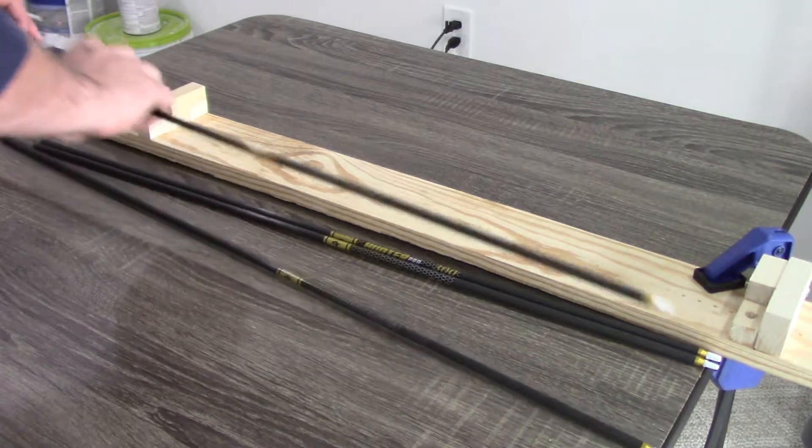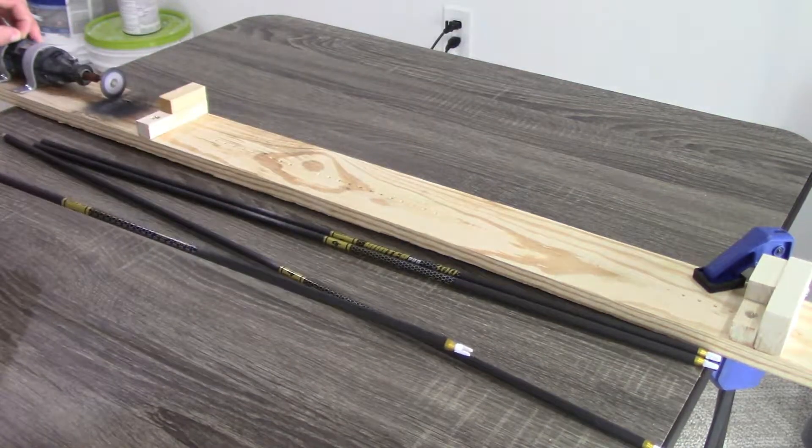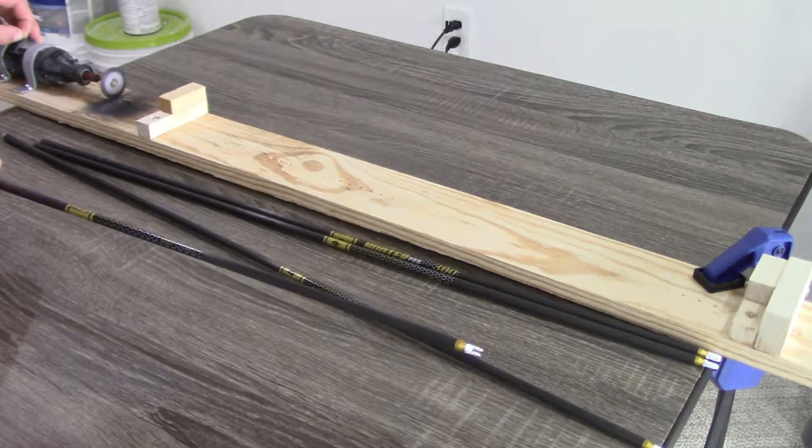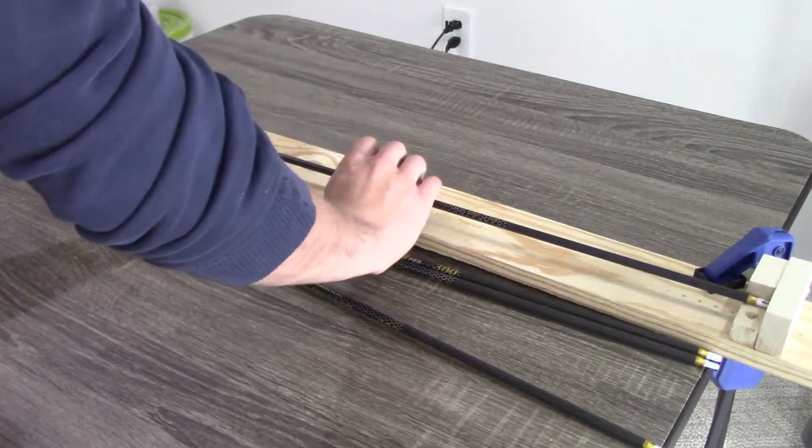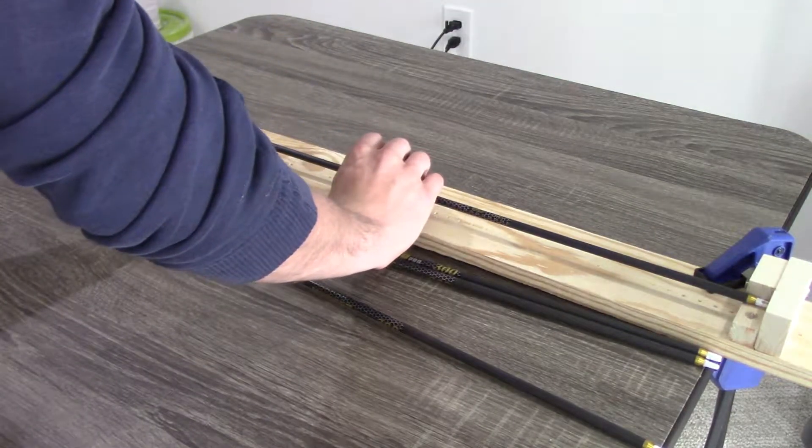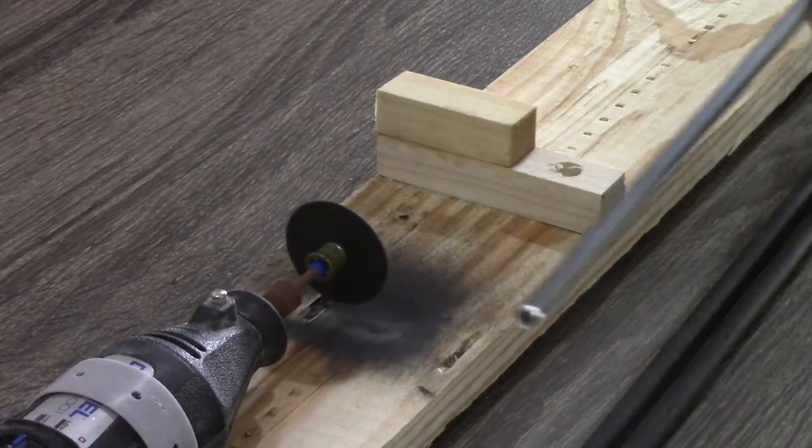The shaft I'm going to be starting with is a Gold Tip Pro Hunter 300 spine, 9.3 grains per inch. I'm going to be cutting these to length on my homemade arrow saw. I just made this with a Dremel and some scrap lumber.